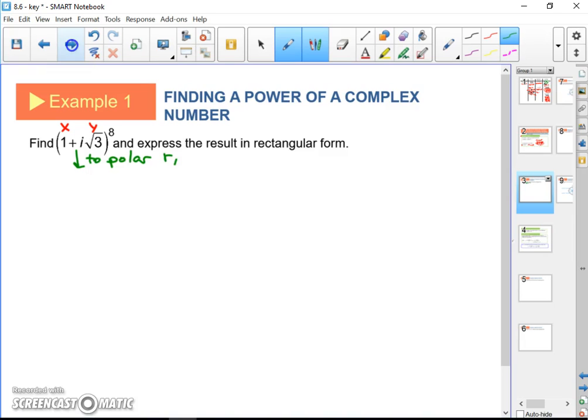Remember, for polar we're going to need a magnitude and the direction. R, or our magnitude, is going to be √(1² + (√3)²). Square root of 1 plus 3, that's going to be √4, which is 2. So we have a magnitude of 2.